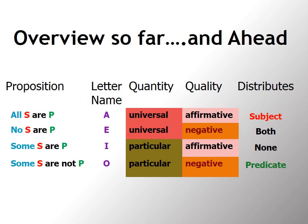So this table basically summarizes everything that we've studied so far and what lies ahead. You notice that I just added one new column to the table, one for distribution. It turns out that the A sentences, all S are P, distributes the subject. And that's pretty obvious why that would be the case. Now, the E sentences, no S are P, distributes both the subject and predicate.